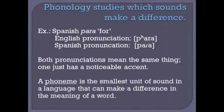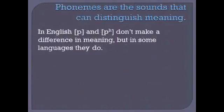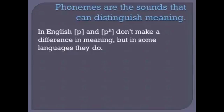That brings us to one of the terms that will become really important: phoneme. A phoneme is the smallest unit of sound in a language that can make a difference in the meaning of a word. For instance, an English unaspirated P and an English aspirated P don't make a difference in meaning — they are not different phonemes. In some languages, they are different phonemes; you could have 'pat' and 'pat' be different words with different meanings.